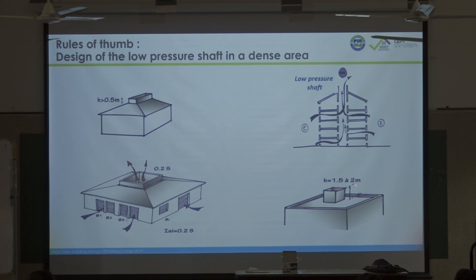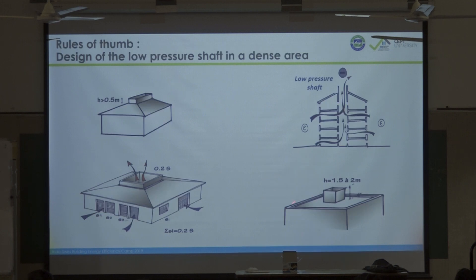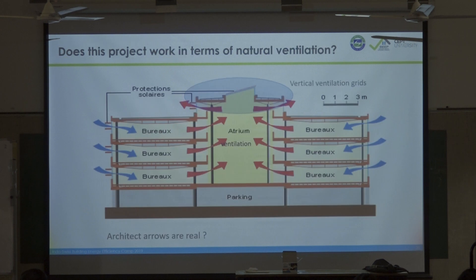There is a shear layer located at the first meter off the slope of the roof. To get a stable wind effect, you have to design the shaft above this shear layer — meaning with a height of 2 meters you can catch the good wind signal. The theory will be available and I will be here till the end of the week to help you design a low pressure shaft.